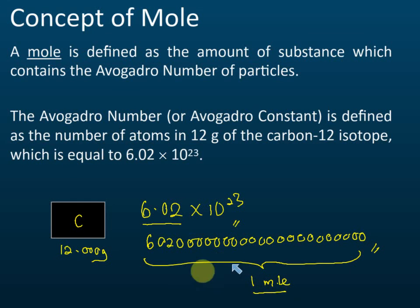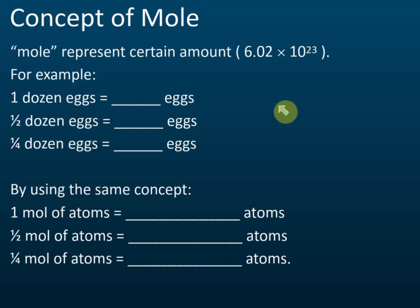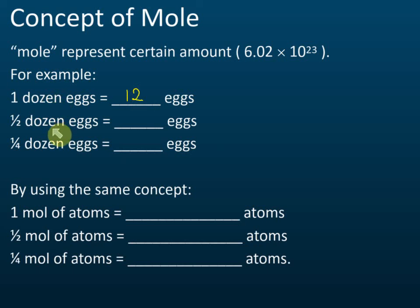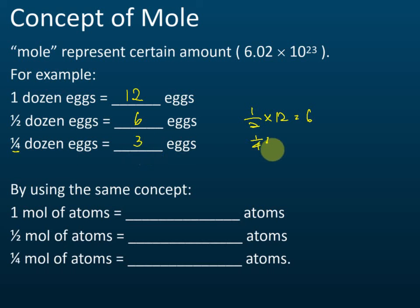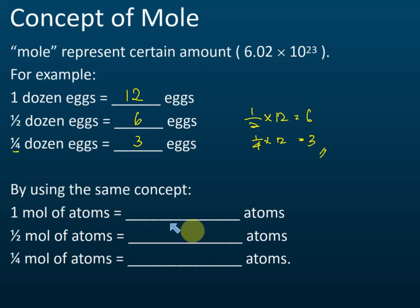A mole is a number — it represents the value 6.02 times 10 to the power of 23. For example, one dozen eggs equals 12, so 'dozen' represents a number. Half a dozen is 6, a quarter dozen is 3. Similarly, 'mole' represents a number — the concept is the same, it just represents a very large number.